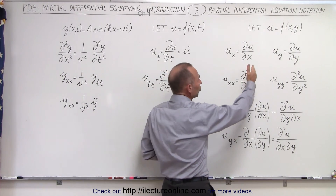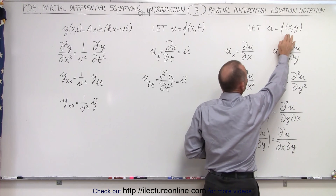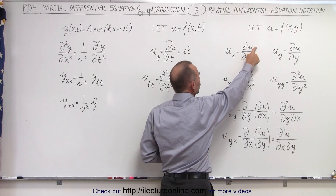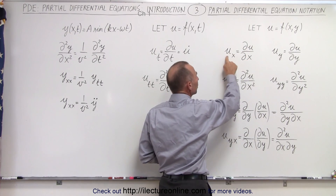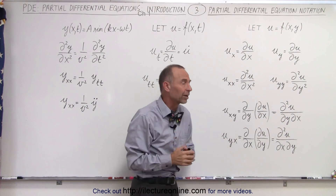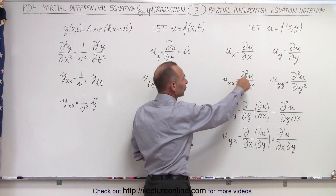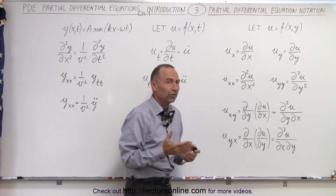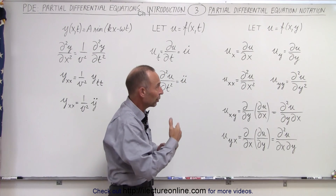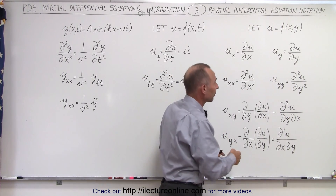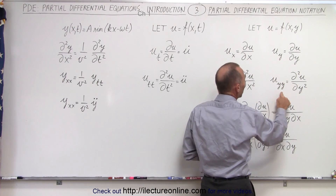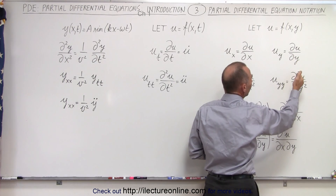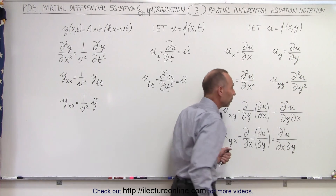For example, if we have a function u, which is a function of the two independent variables x and y, we can write the partial derivative of u with respect to x as simply u with a subscript x. And the second partial derivative of u with respect to x can be written as u sub xx. Similarly, taking the partial derivative with respect to the other variable, we can write it as u sub y or u sub yy to indicate the first or second partial derivative of u with respect to y.